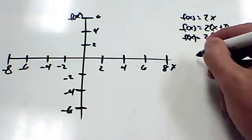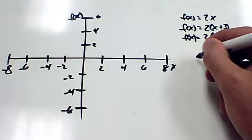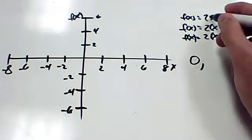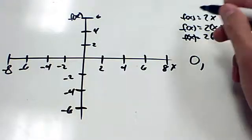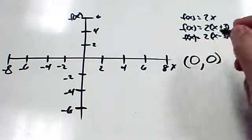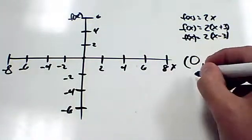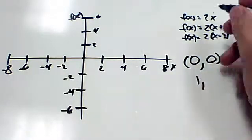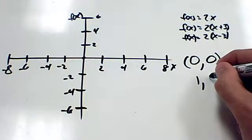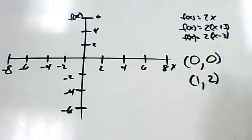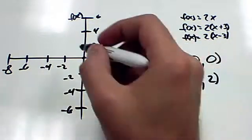So just like last time, we would just assign values of x. So let's say when x is 0, then f of x is 2 times 0, which makes 0, and we would get the point at the origin. When x is 1, f of x is 2 times 1, so we'd get f of x is 2, and we'd have a coordinate point at 1, 2.